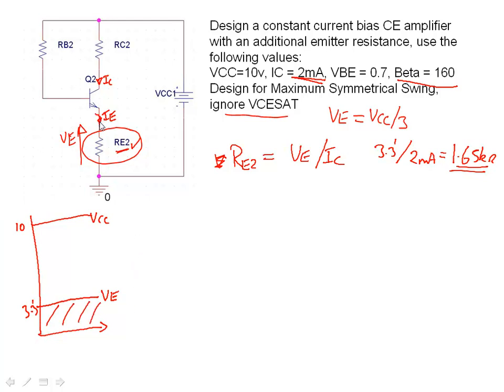That means the collector cannot go anywhere lower than VE. So if you think about it, the emitter here is at 3.3 volts, the collector can only go down to 3.3 volts. We're ignoring VCE sat, it will be a little bit higher. So we need our collector to sit somewhere in the middle of the supply voltage and VE. That would give us our maximum symmetrical swing. Well, if we do the math it's very simple.